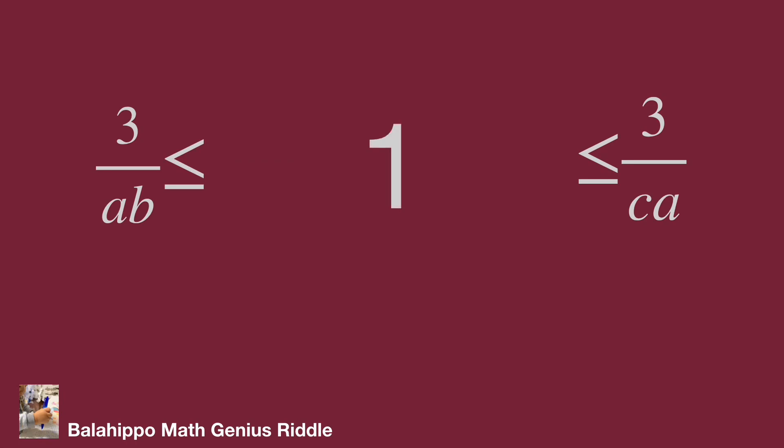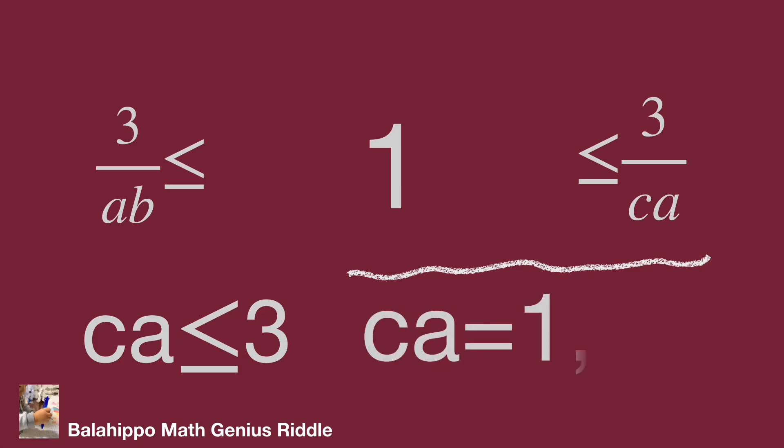Then let's find the result. From 1 less or equal to 3 over CA, we get CA less or equal to 3. Due to A, B, C are positive integers, CA could be equal to 1, 2, and 3. After that, check each value one by one.